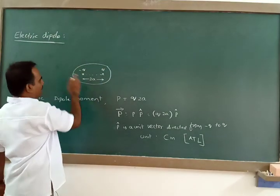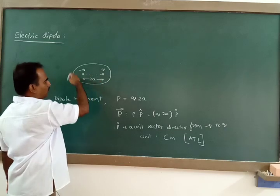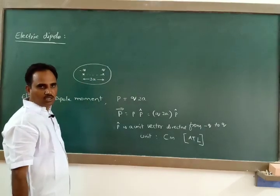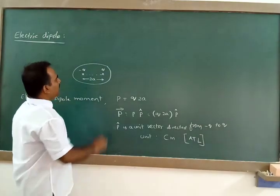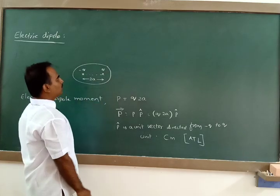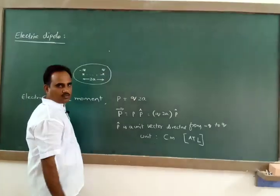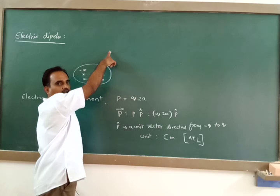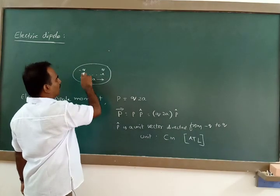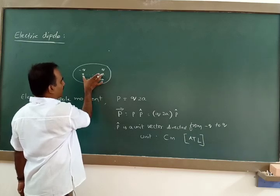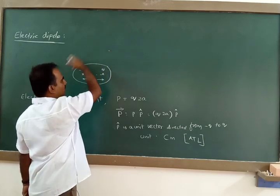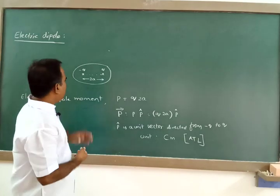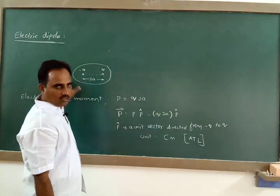In an electric dipole, the total charge is zero — it is plus Q and minus Q, so the net charge is zero. However, the electric field due to the dipole is not zero. Because at any point, due to the positive charge there is an electric field and due to the negative charge there is an electric field. Since the two charges are separated by some distance, at any point surrounding the dipole the electric field cannot become zero. So in a dipole, the net charge is zero but not the electric field.